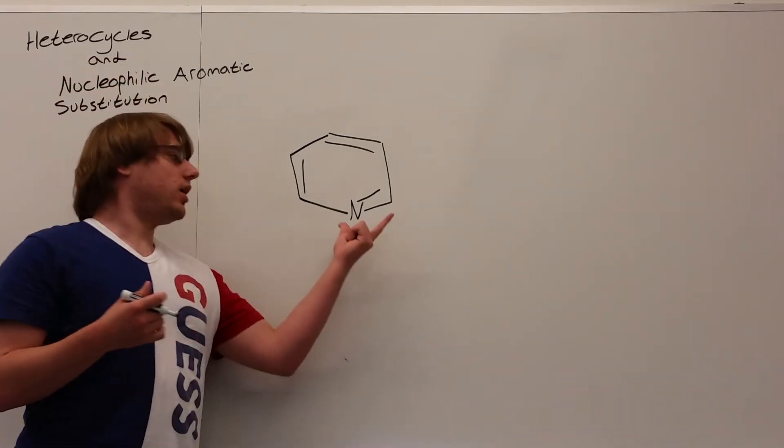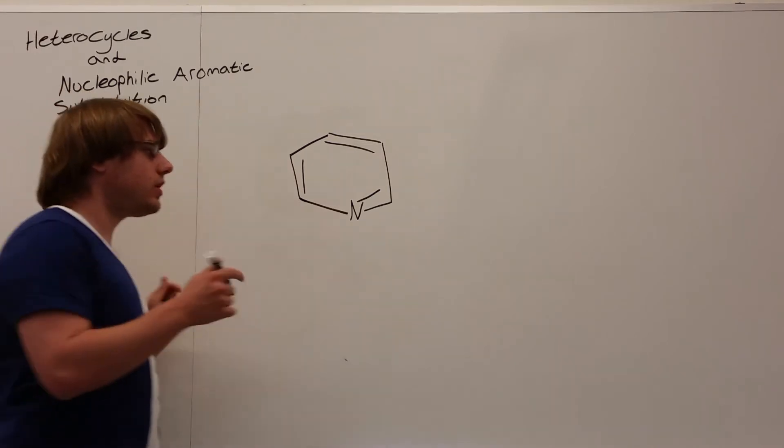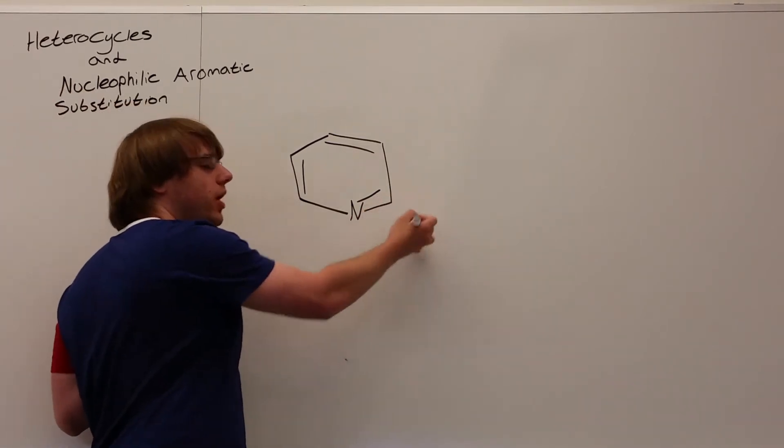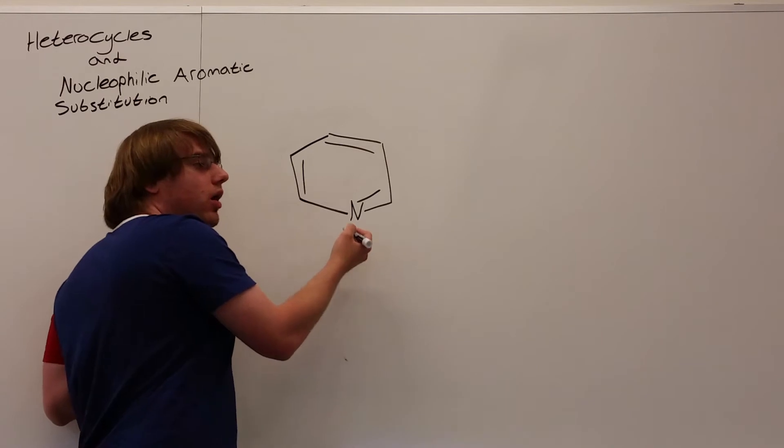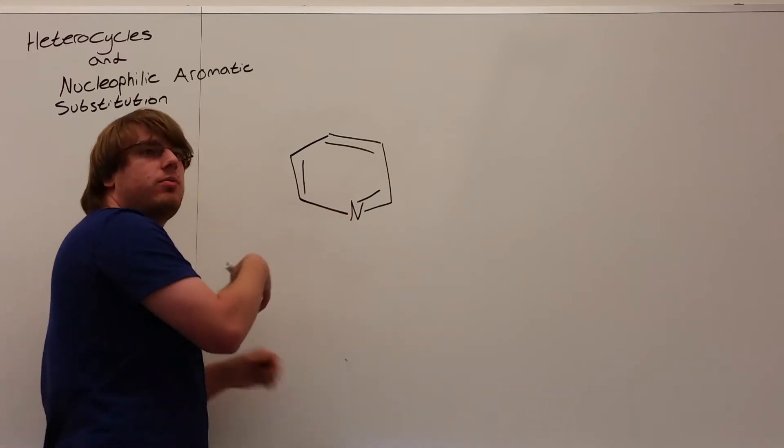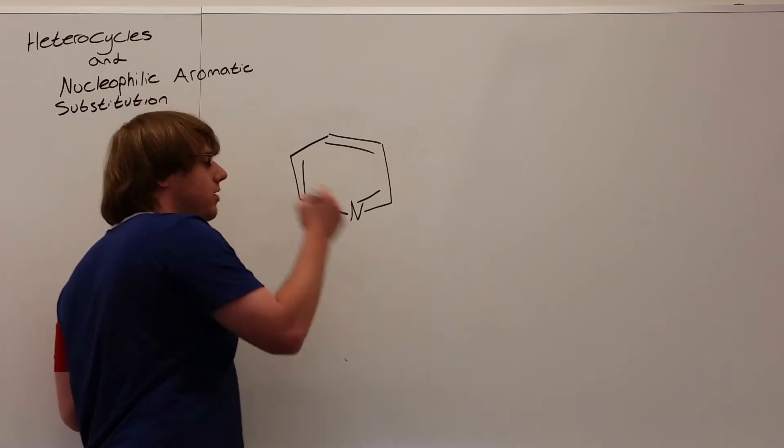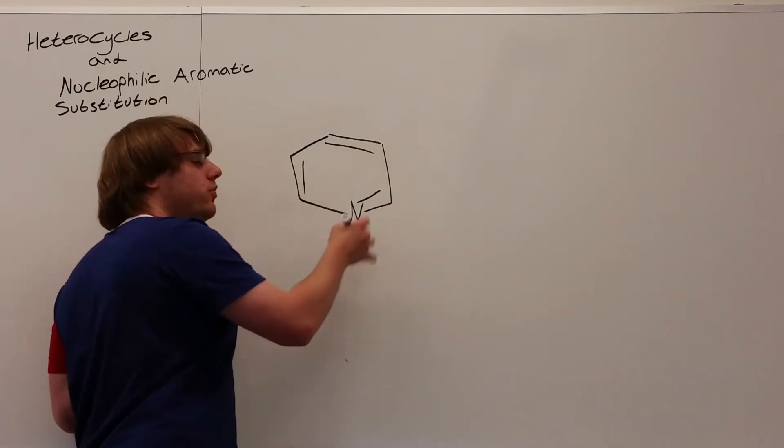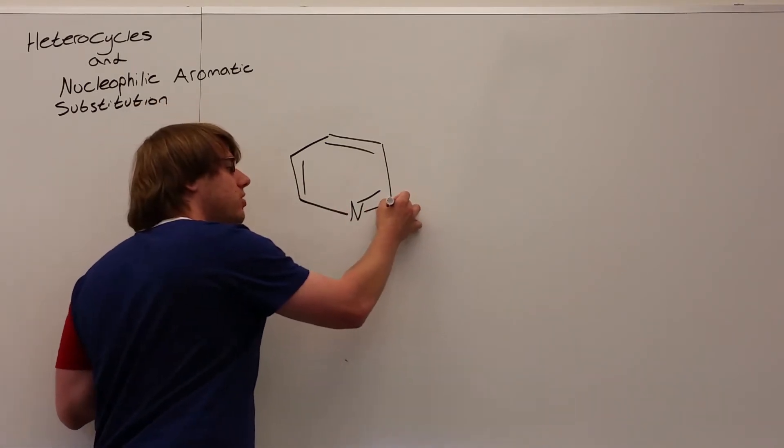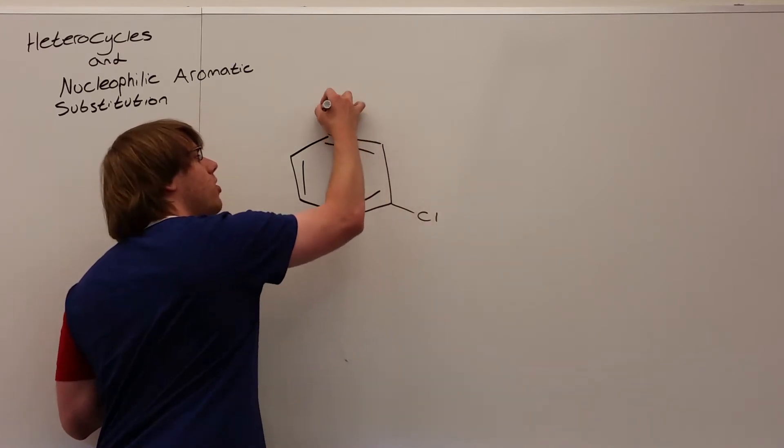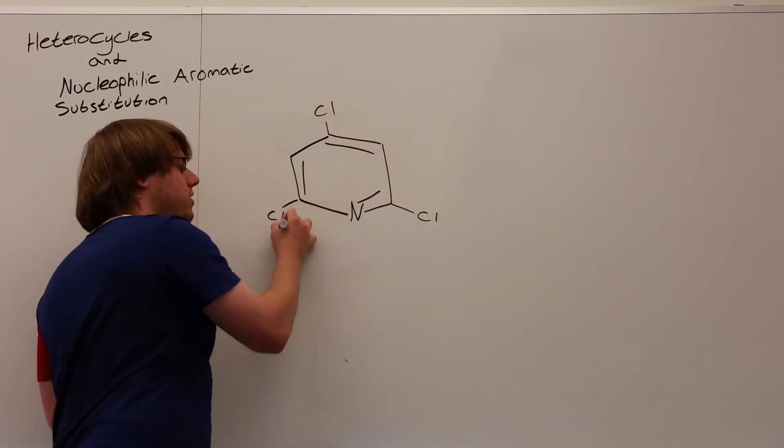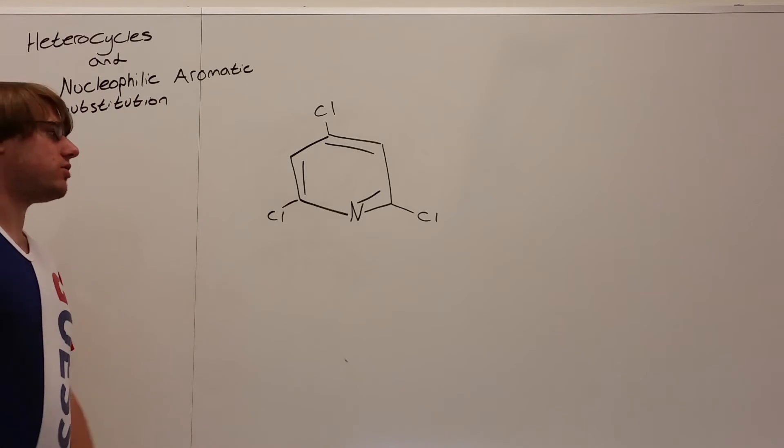And so the way nucleophilic aromatic substitution works is as follows. You will see a nitrogen in your ring, and you will have a leaving group on that ring as well. Now that leaving group is typically going to be a halogen, chlorine, bromine, maybe even iodine. And the rule is that leaving group, if you want to replace it, it must be in either the ortho or the para position, so one of these three positions relative to the nitrogen.